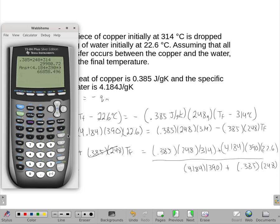I'm going to divide that by, in parentheses, 4.184 times 390 plus, and then I'll do another set of parentheses, 0.385 times 248, and close two sets of parentheses, equals, and I get 38.7.